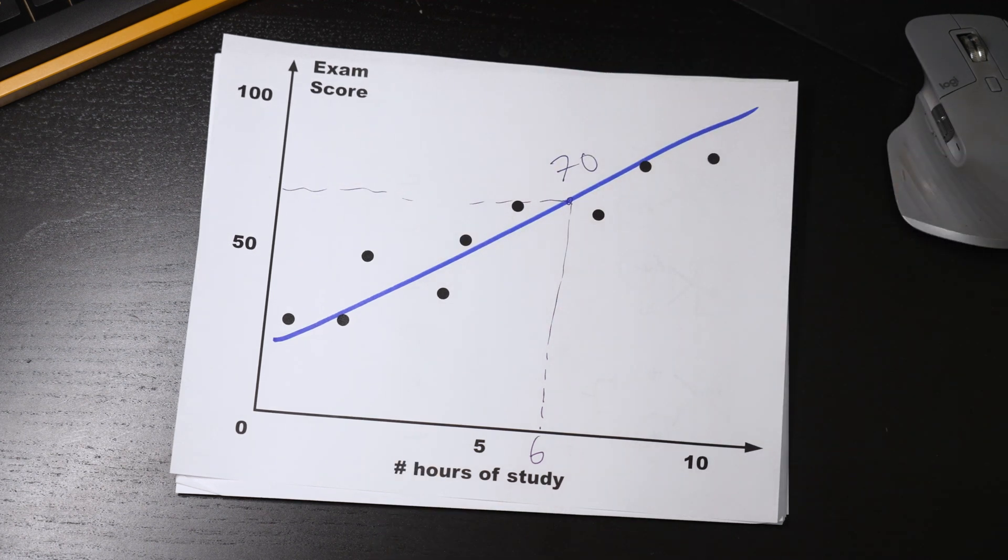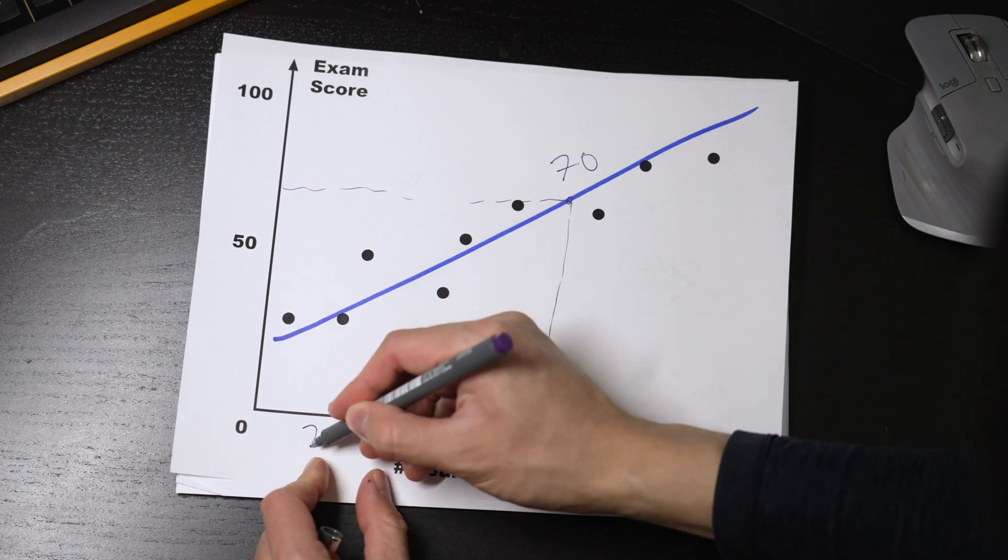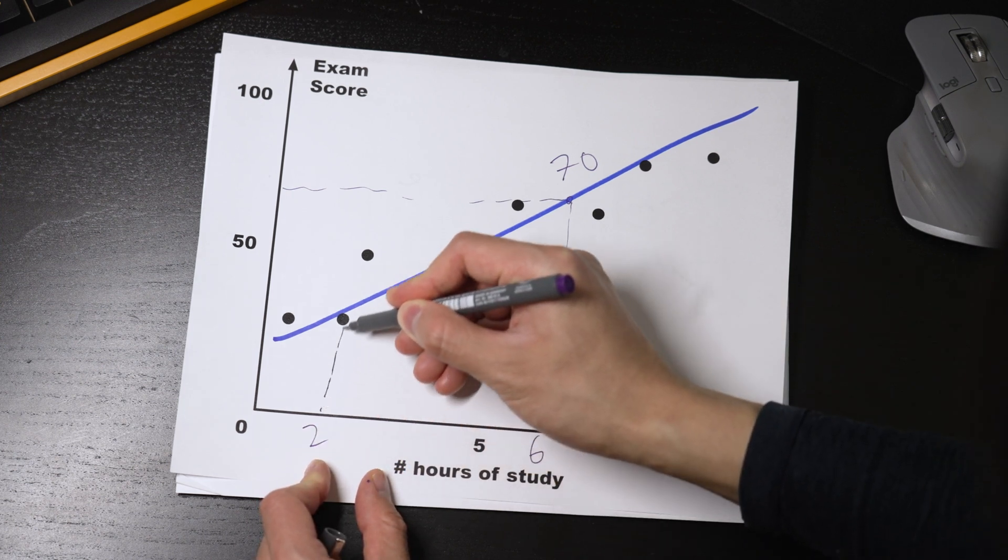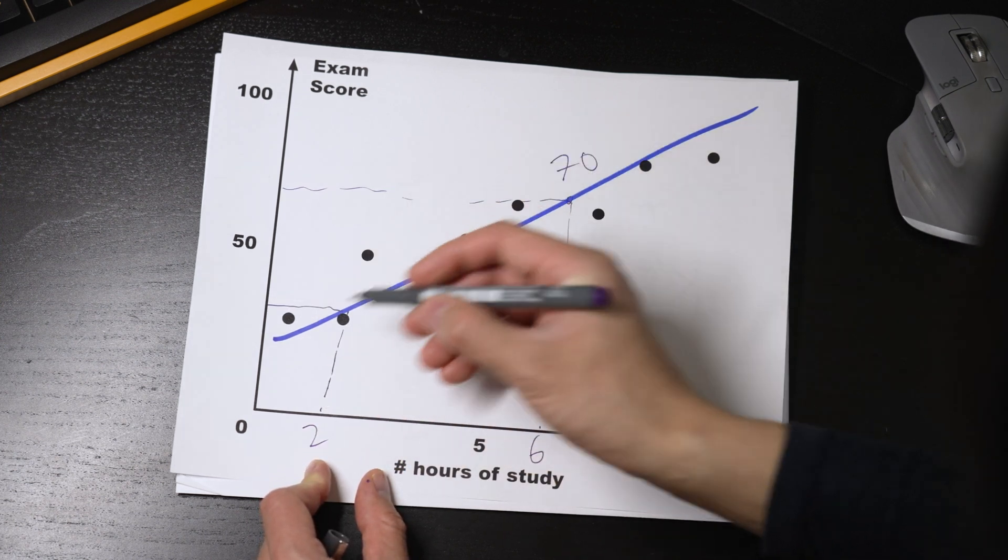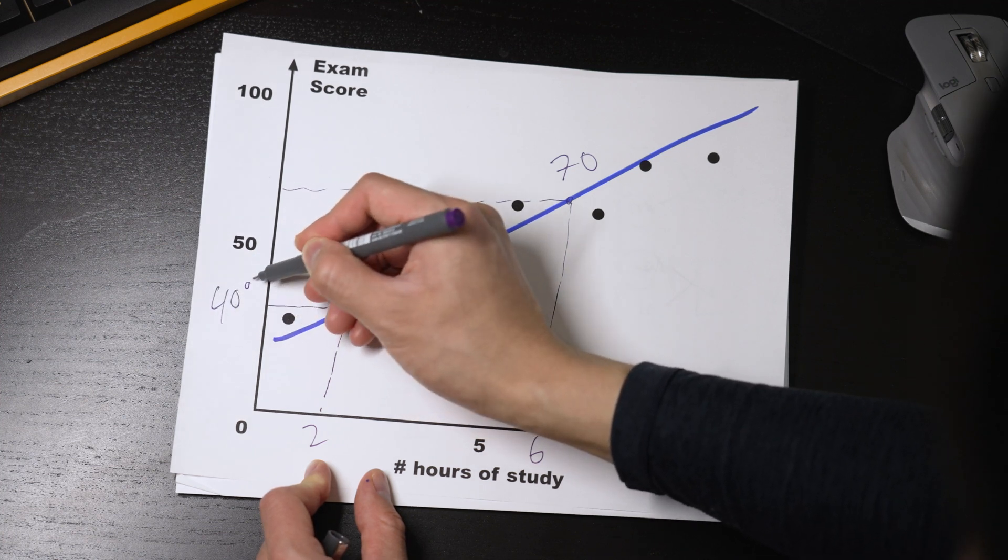If you told me you studied for two hours, I'd predict you'd only get 40 on your exam. That's machine learning.